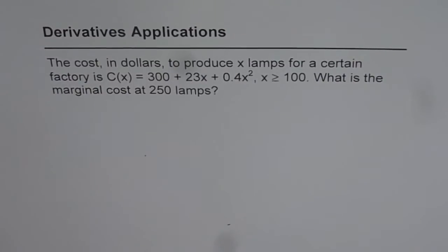Here is an example where we will see derivatives application in economics. The cost in dollars to produce x lamps for a certain factory is C(x) = 300 + 23x + 0.4x² where x ≥ 100. What is the marginal cost at 250 lamps?